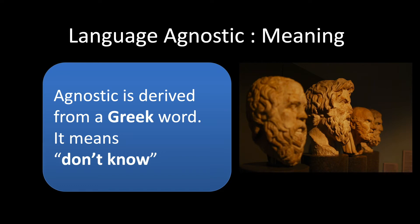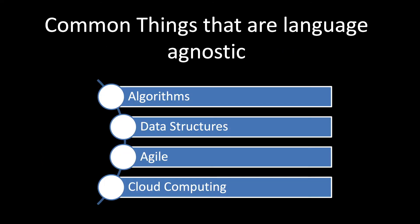For example, binary search can be the same in Java, the same in C — the same algorithm can be implemented in multiple languages. So what are the things we often see as language agnostic? There are algorithms that are language agnostic, as shown in that example.